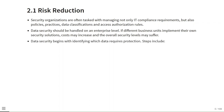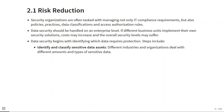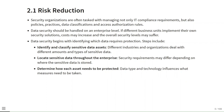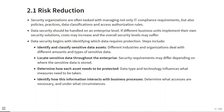Data security begins with identifying which data requires protection. Steps include: identify and classify sensitive data assets, as different industries deal with different amounts and types of sensitive data; locate sensitive data throughout the enterprise, since security requirements may differ depending on where data is stored; determine how each asset needs to be protected; identify how information interacts with business processes; determine what accesses are necessary; and assess both external threats such as hackers and thieves, and internal threats such as employees and processes.